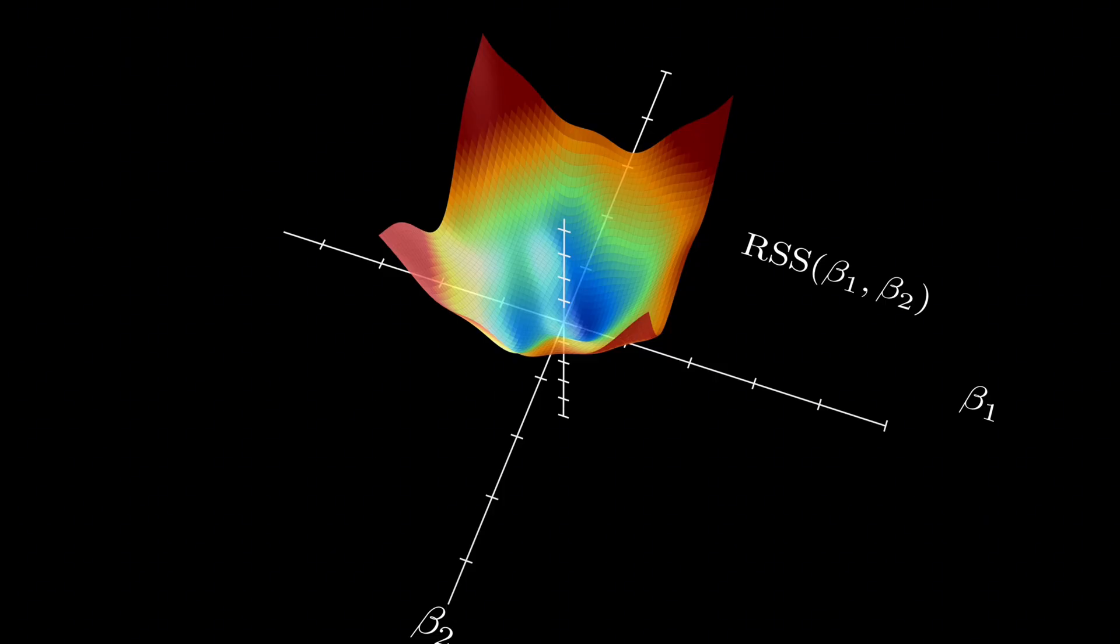First, there's the issue of local minima. Many loss functions, especially in deep learning, are non-convex. This means they have many local minima. Depending on where we start, gradient descent might find a local minimum instead of the global one. That's why initialization matters.